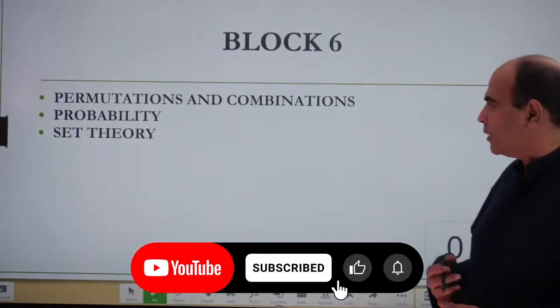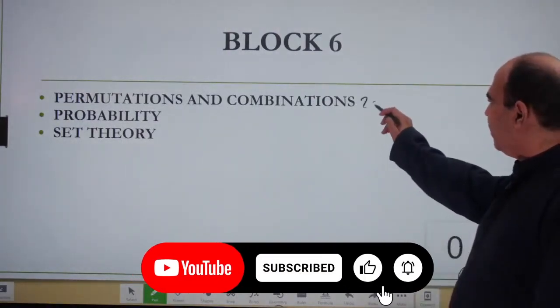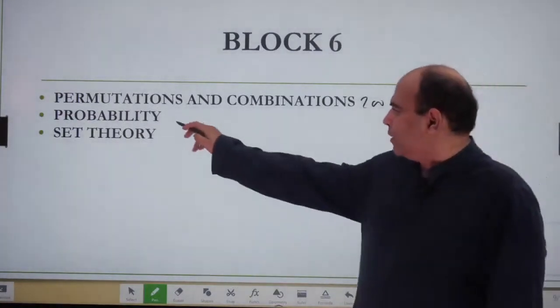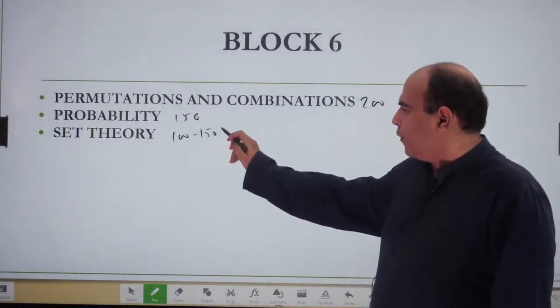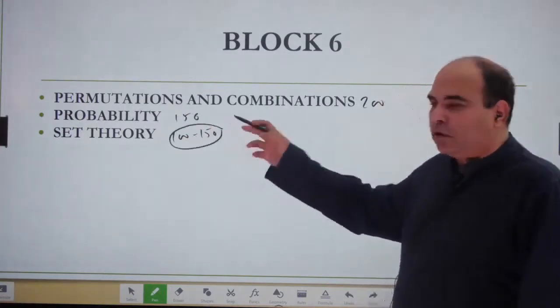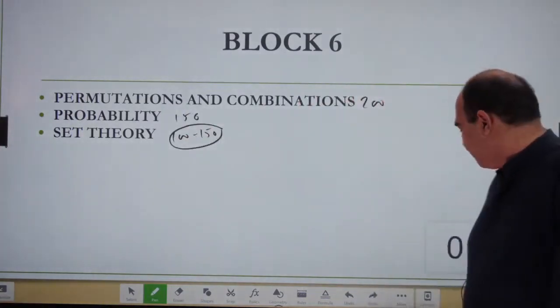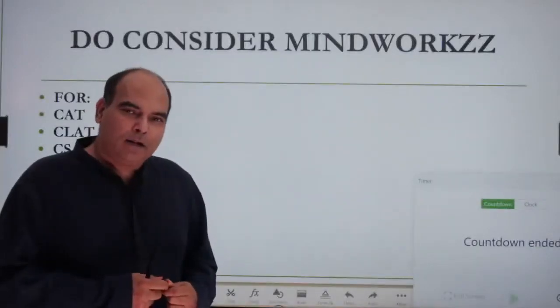Permutation and combination is a 200-question chapter, probability is 150, and set theory is 100-150 questions. Thank you so much. I'll be back tomorrow. Bye for now, thank you so much.